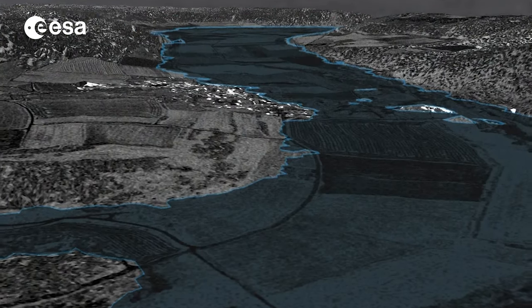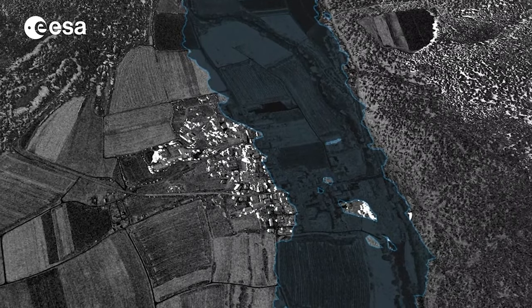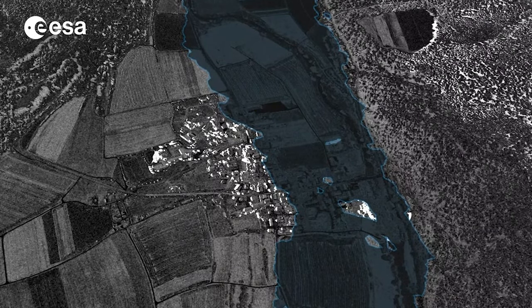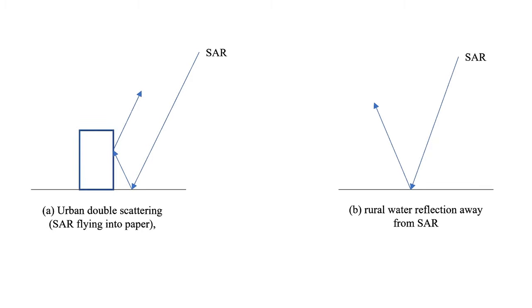Our method compares an image taken during the flood with an image taken before the flood. In urban areas, as you can see in A, it searches for strong double scattering from SAR to ground to wall and back to SAR in the unflooded image, for walls that are roughly parallel to the satellite direction of travel. If such double scatterers show strong returns in the flooded image compared to the unflooded image, they are likely to be flooded, as the reflectance of water is much higher than that of asphalt.